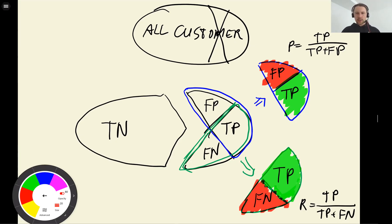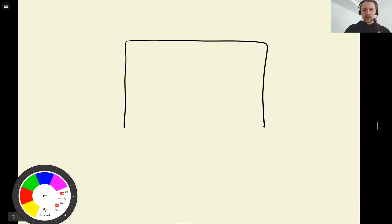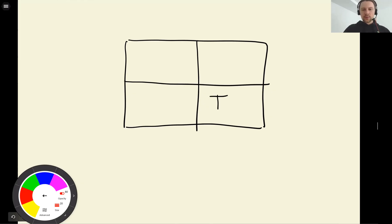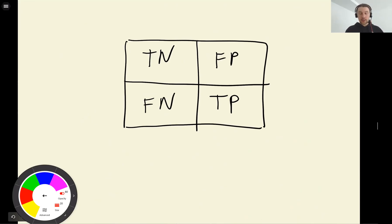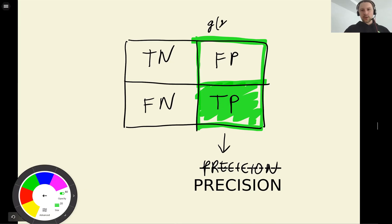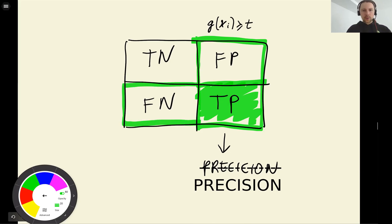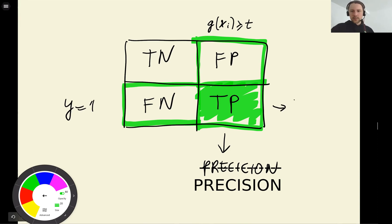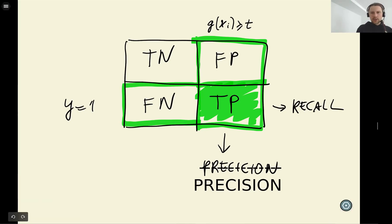We also have the confusion table. We have true positive, true negative, false positive, and false negative. If you look at the confusion table, precision corresponds to looking at only the predicted-positive column — true positive and false positive. Recall corresponds to looking at only the actually-positive row — true positive and false negative. Then we just divide one by the other. They are quite useful metrics, and it takes some time to get used to the names and remember which is which.